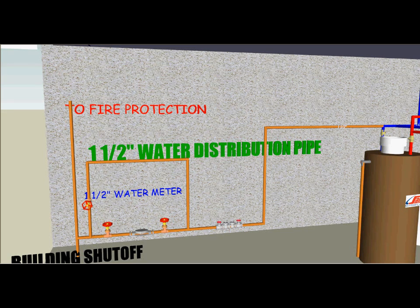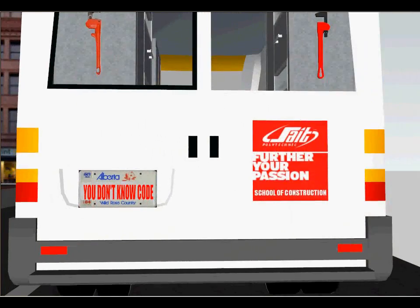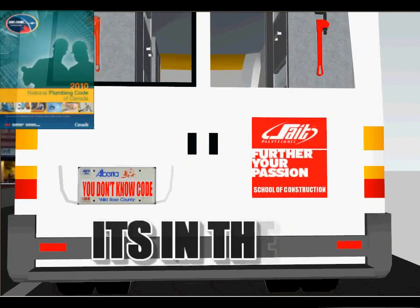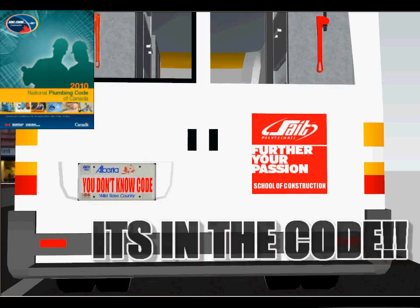We have now completed Part 1: sizing the water service and the water distribution pipe. Part 2 will size the water distribution hot and cold branches in the building. Please check your modules for more information on water sizing.